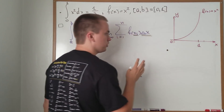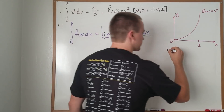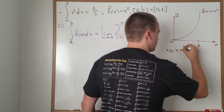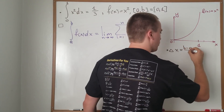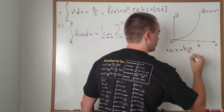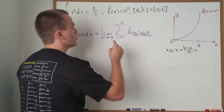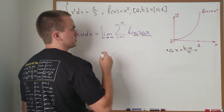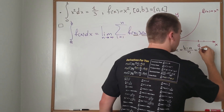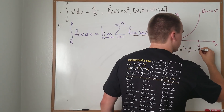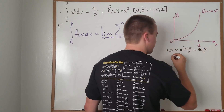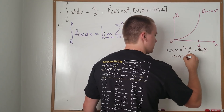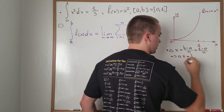According to the definition, Δx equals (b − a)/n. In this case b equals 1 and a equals 0, so we have (1 − 0)/n. Therefore Δx equals 1/n.